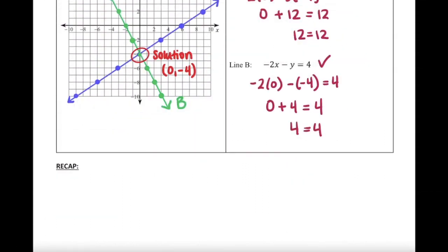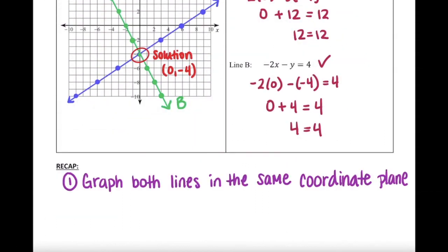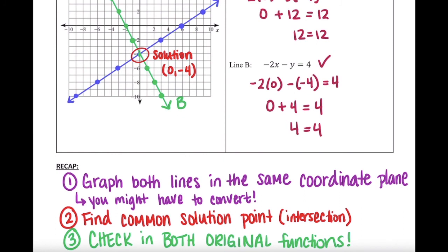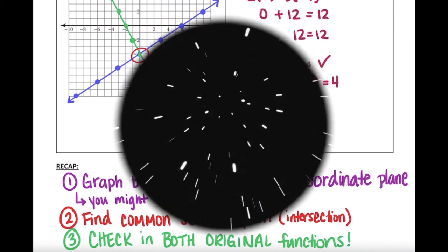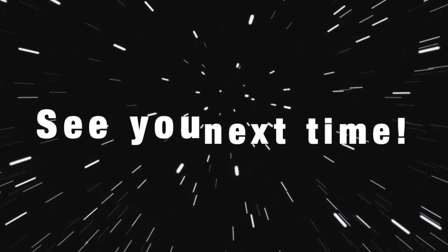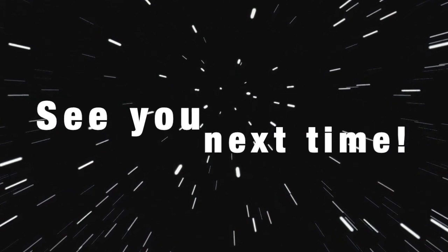To recap: the first thing you do is graph both lines in the same coordinate plane. Keep in mind, you might have to do some converting. You're looking for a common solution point, which is the intersection of both lines — meaning that point is on both lines and a solution to both. And you're checking it in both of the original functions. That's it for today's lesson. I will see you next time. Bye.